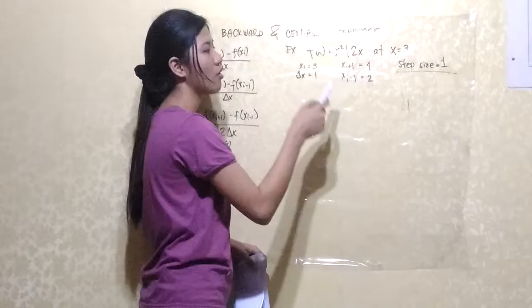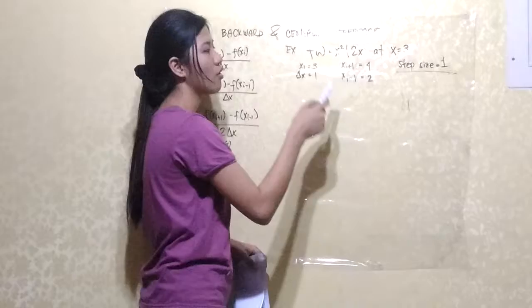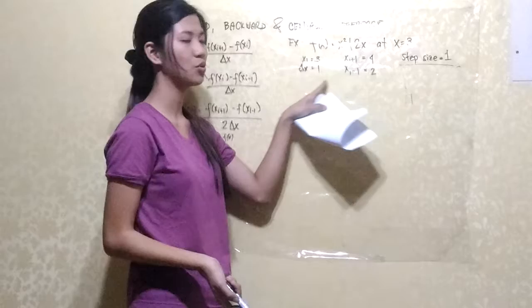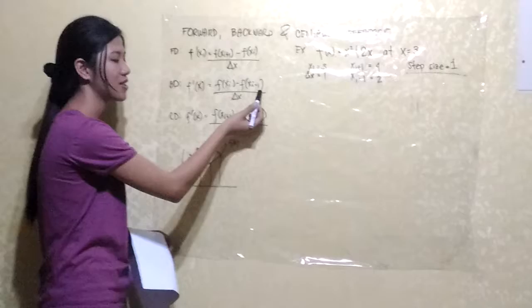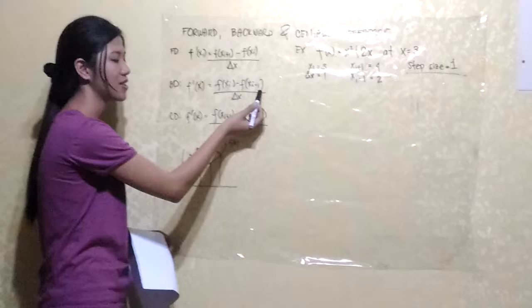The point of interest plus our step size would be 4 — that is 3 plus 1 — and our point of interest minus the step size would be 3 minus 1, which equals 2. To solve this, we are going to find the values of the function at x sub i plus 1, x sub i minus 1, and our point of interest x sub i.